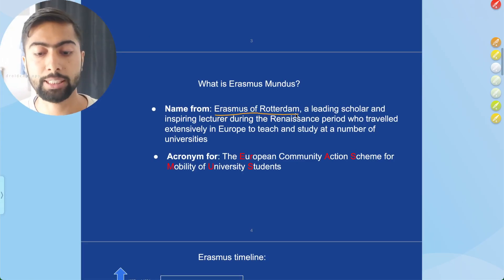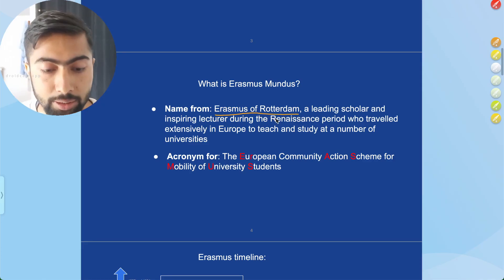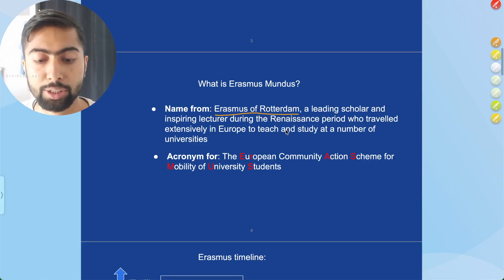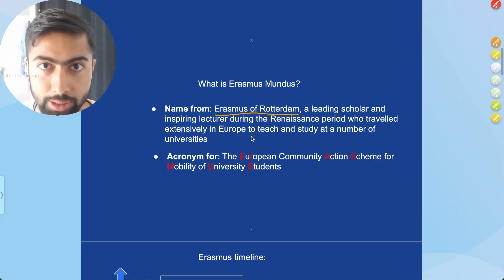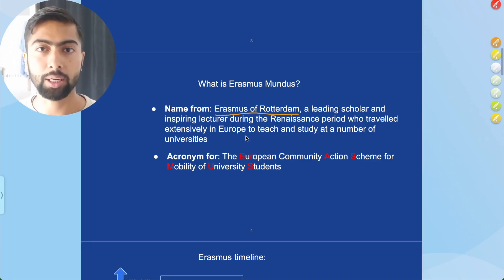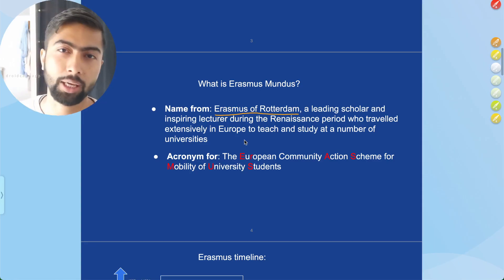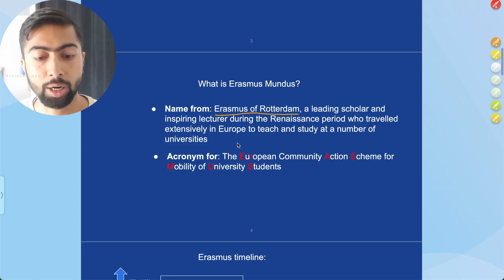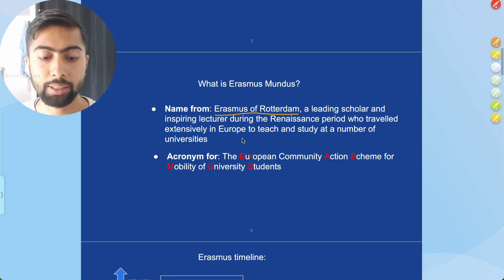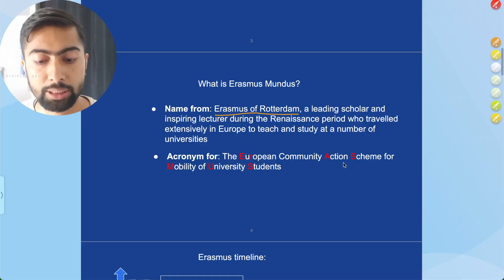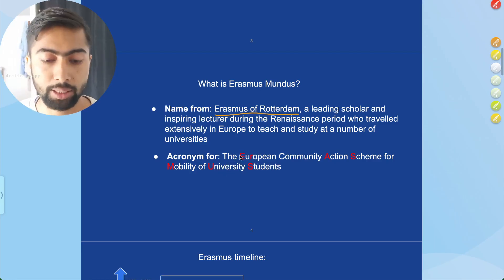The name for the Erasmus program was taken from Erasmus of Rotterdam, a leading scholar and inspiring lecturer during the Renaissance period who traveled extensively in Europe to teach and study at a number of universities. I will drop a link in the description about that. The name also works as an acronym for European Community Action Scheme for Mobility of University Students, known as ERASMUS.